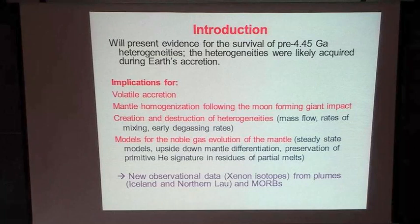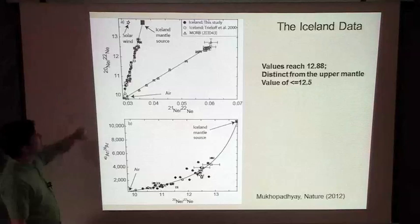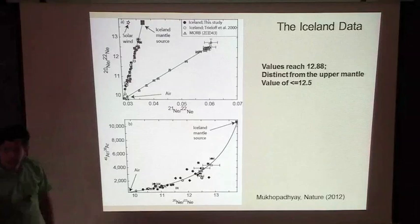The top panel here shows neon isotopes. The important point is that this isotope ratio — neon-20 to -22 — does not change in the mantle, whereas this other isotope ratio does change as a function of time, because you actually produce this isotope from nuclear reactions, but there's nothing really producing either of these other isotopes.